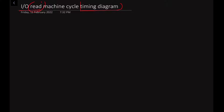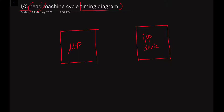Suppose we have an input device and we have the 8085 microprocessor. We have to read the content of the input device, meaning we have to transfer the input device content to the microprocessor. This is a read operation. You have to be clear in mind while reading the question from the examination point of view — this is a read instruction.